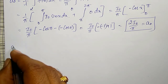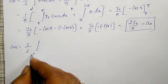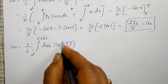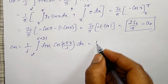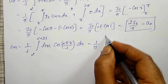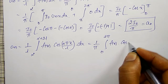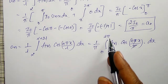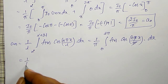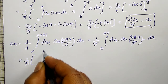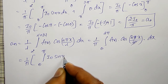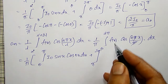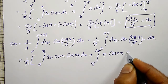Next I calculate Aₙ. Its definition is (1/l)∫[0 to 2π] F(x) cos(nπx/l) dx. With l = π, the π's cancel. Splitting the integral: (1/π)[∫₀^π I₀ sin x cos(nx) dx + ∫_π^{2π} 0·cos(nx) dx]. The second term is 0.